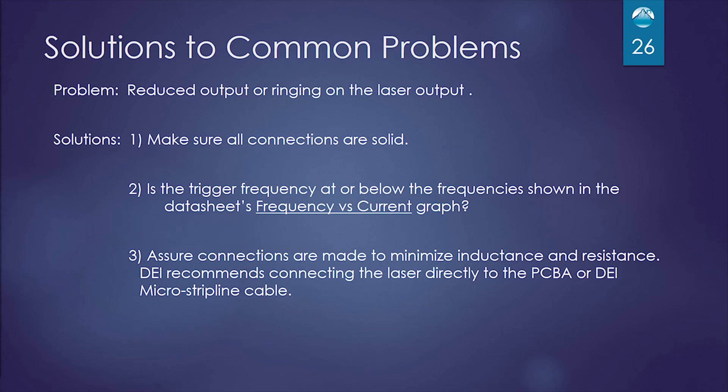Some other problems might be reduced output or ringing on the laser output. You need to make sure all your connections are solid. Second, is make sure that your trigger frequency is at or below the frequency shown on the safe operating area graph that we went over earlier. And third, you must assure that your connections on your laser diode are made as well as possible to reduce inductance and resistance. You need to keep those leads as short as possible and soldered as well as you could. Also, you can use the microstrip line cable, but the output on the laser connected to that is never going to be as good as a laser connected directly to the printed circuit board.